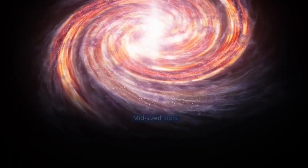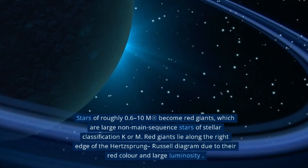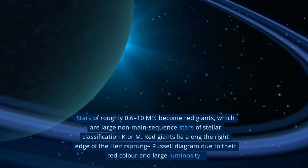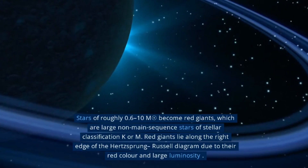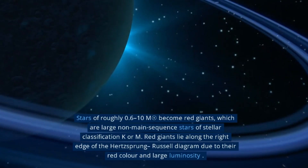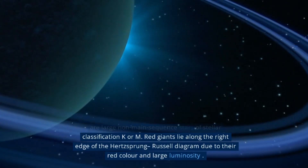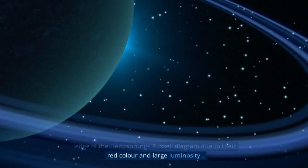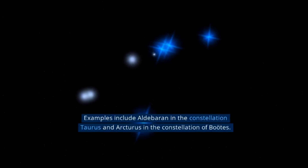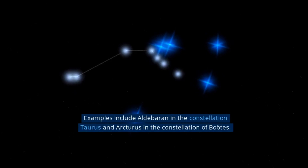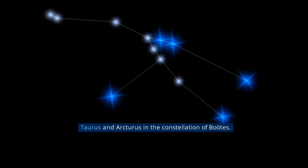Mid-size stars: Stars of roughly 0.6 to 10 solar masses become red giants, which are large non-main sequence stars of stellar classification K or M. Red giants lie along the right edge of the Hertzsprung-Russell diagram due to their red color and large luminosity. Examples include Aldebaran in the constellation Taurus and Arcturus in the constellation Boötes.